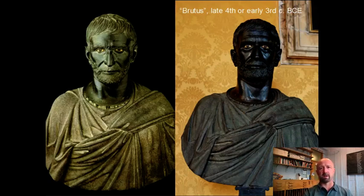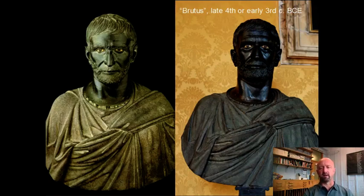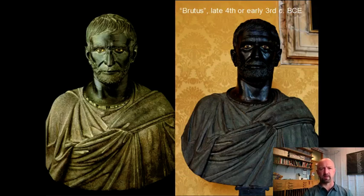One of the early Republican leaders named Brutus — you see here — is an example of Roman portrait sculpture. Roman portrait sculpture of the Republican period, more often than not, is what we call veristic. It's meant to be a likeness of the person that it represents. Unlike Greek culture that idealized its subject, Roman culture tended to focus on the individual characteristics of the person sitting for the portrait. There are a couple of reasons for this.